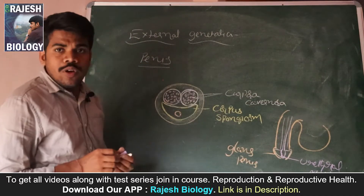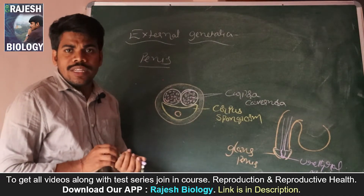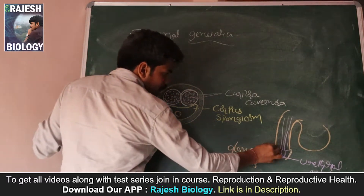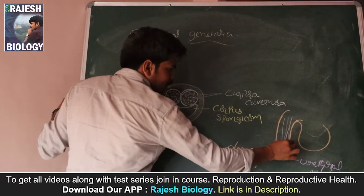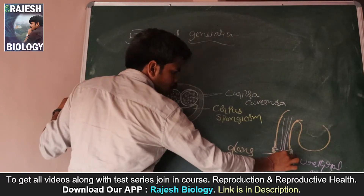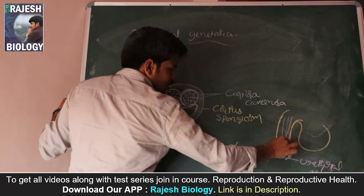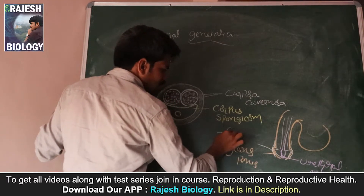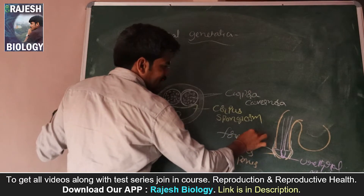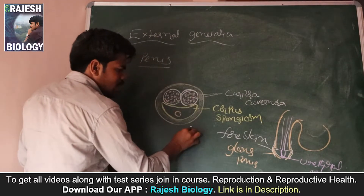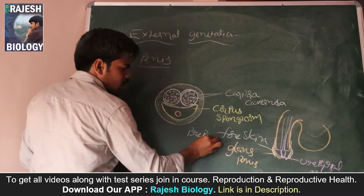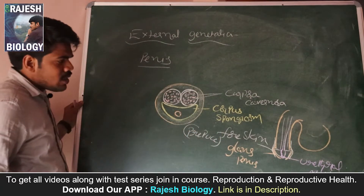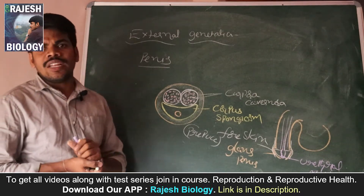The bulbous end of the penis is called the glans penis. The glans penis is covered by a loose fold of skin tissue called the foreskin, which is also called the prepuce. This is the external genitalia structure.